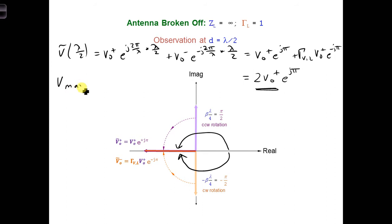we can write v max is the amplitude of v naught plus plus the amplitude of the voltage reflection coefficient times v naught plus. This is when they are parallel to each other. So we could simplify to the amplitude of v naught plus times 1 plus the reflection coefficient of the voltage at the load.